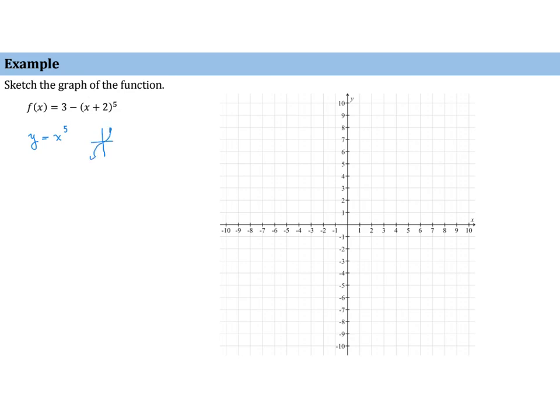So, now we have three transformations of that. We have an addition of two, we have the negative, and then we have three. So, let's maybe rewrite this as f of x equals negative x plus two, raised to the fifth, and then add three.